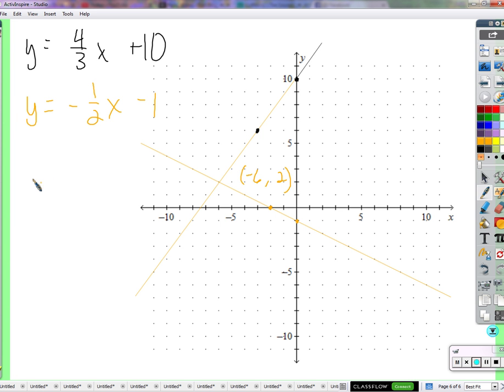But we can test it just to make sure. So y should be what? Two. Two should equal four-thirds times negative six plus ten. Let's see. Two equals four times negative two, negative eight plus ten. That's two. Okay?